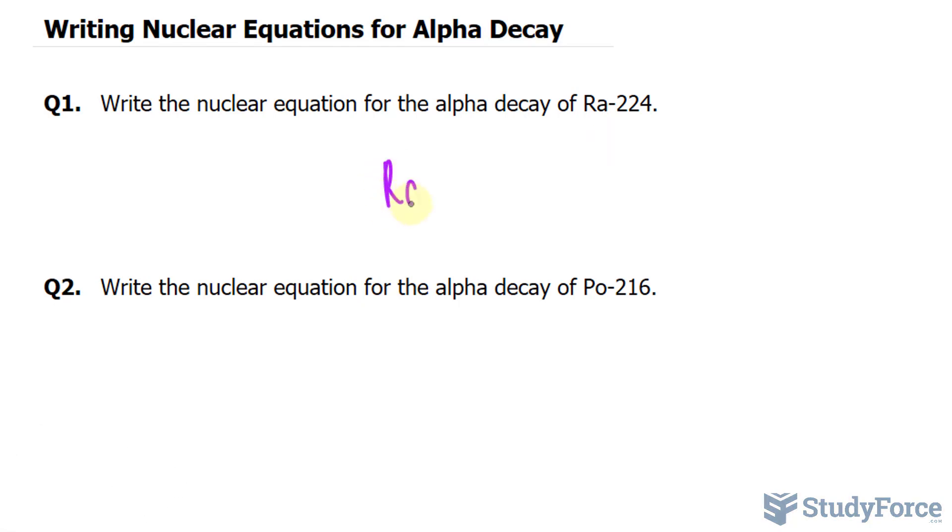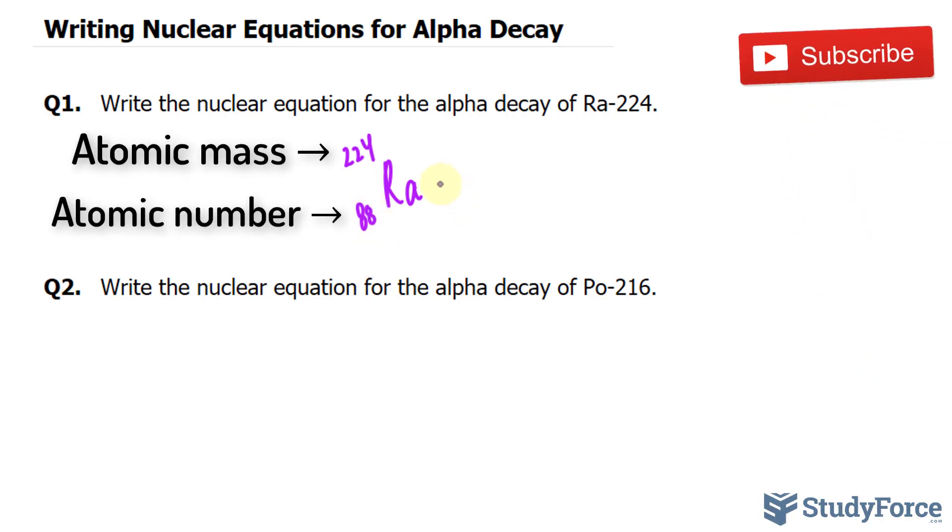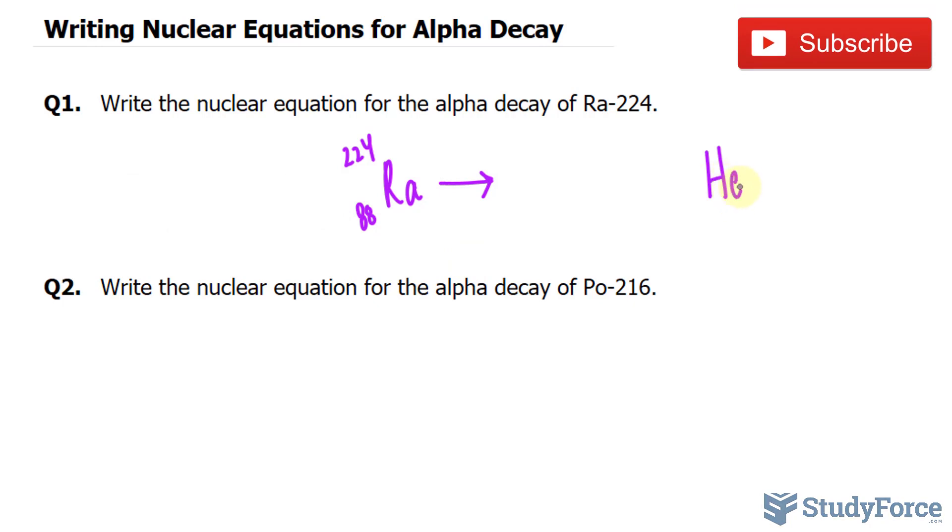So we have radium, its atomic mass is 224, and the amount of protons within one atom is 88, which is its atomic number. This forms an alpha particle, and an alpha particle is helium, atomic mass of four, and two protons.